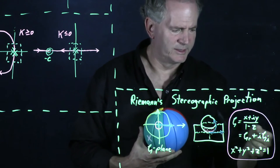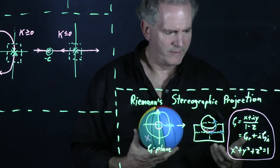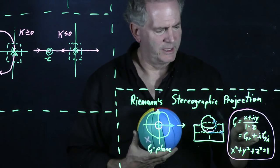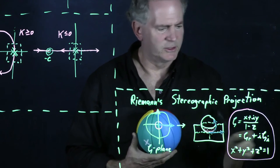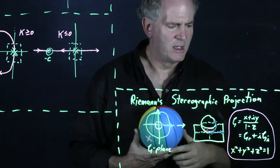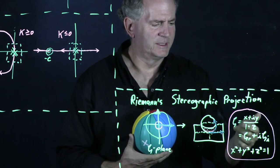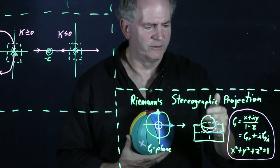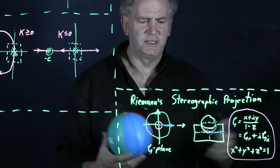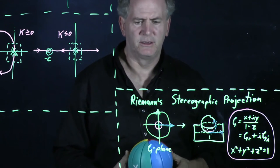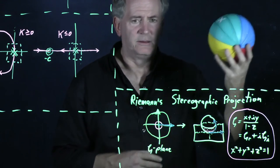And if zeta r squared plus zeta i squared is greater than one, then that corresponds to z which is larger. And as the sum of the squares of these things approaches infinity, then that corresponds to z which is approaching one. So you're moving up to the top of the sphere. So that's the stereographic projection proposed by Riemann defining the Riemann sphere.